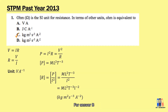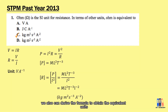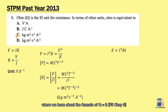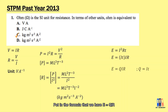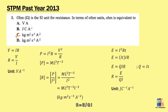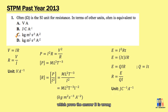For answer B, we can also derive equivalent units without using dimensions. Energy equals I²Rt, and using Q = IT, we get energy = QIR. Rearranging, resistance equals energy divided by charge times current. This gives units of joule per coulomb per ampere, which proves answer B is wrong.